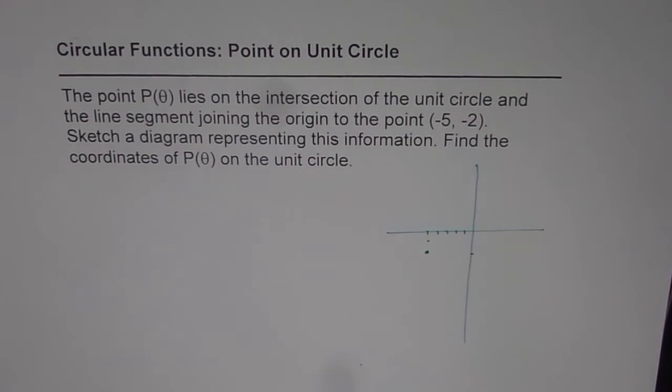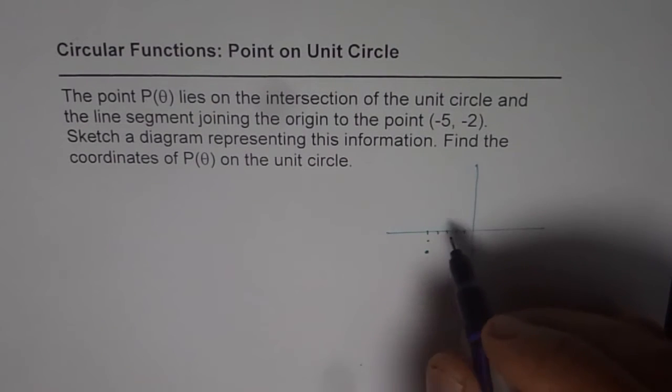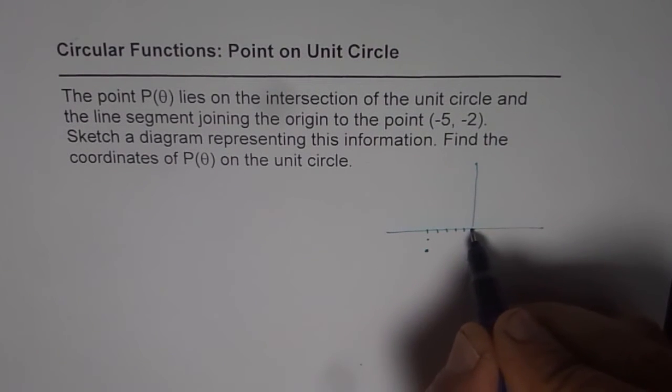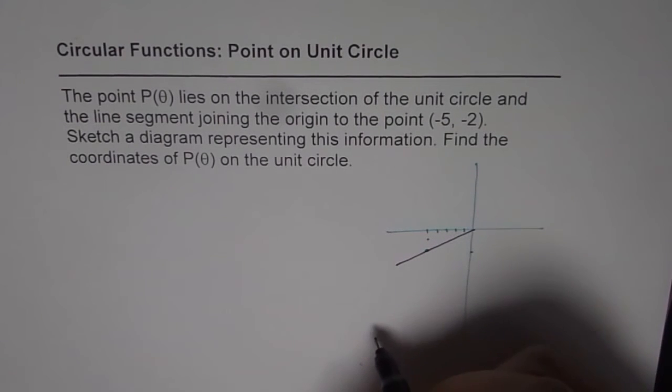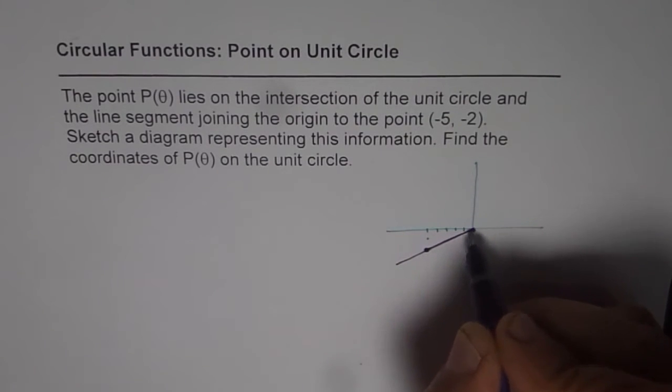So first part is we have to sketch a line segment joining origin to the point (-5, -2). I am making kind of rough sketches. I hope things will be clear. Line segment means you have to just join these two points. So my segment should be here like this.